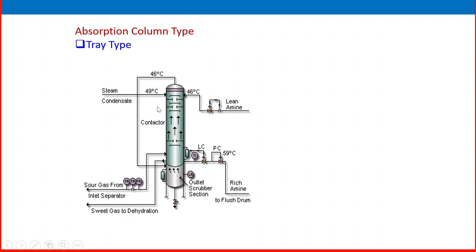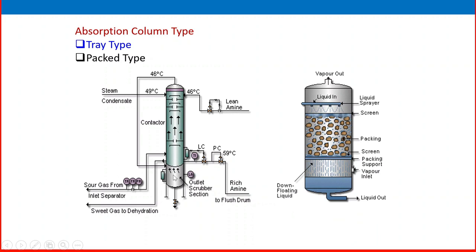Different types of absorbers exist. One is the tray type — shown with detailed internals. Another is the packed type, where instead of trays, random packings fill the column. In the packed type, liquid is sprayed from the top and vapor enters from the bottom; sour gas enters from the inlet separator, and lean amine enters from the top.